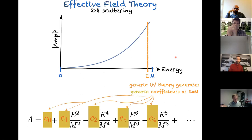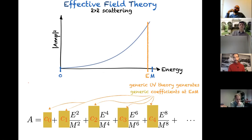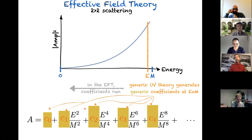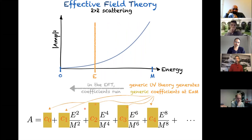Let me first spend a few words about the infrared. The perspective I'll take is to be partly agnostic about the UV theory. We can think of an effective theory as being generated with generic coefficients, represented by their contribution to the two-to-two scattering amplitude as an expansion in energy — coefficients c_0 to c_infinity multiplying powers of s in the forward amplitude. In the infrared, EFTs are themselves quantum field theories, so these coefficients run.